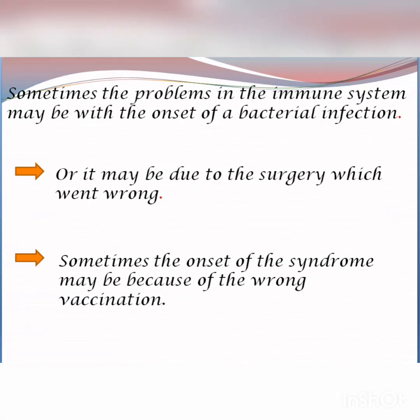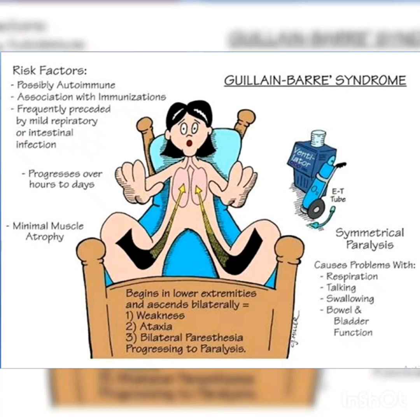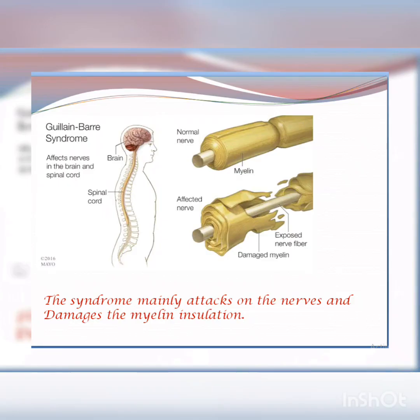Problems in the immune system can be because of bacterial infections or various other reasons which can result in Guillain-Barré syndrome. It may occur if surgery has gone wrong, or if the person has received a different vaccination or if the vaccination was not provided properly. In this picture you can see the various risk factors and problems caused during Guillain-Barré syndrome to a particular patient.